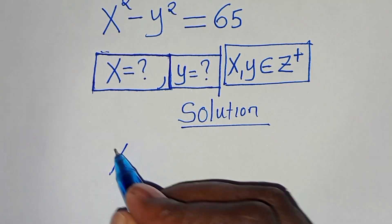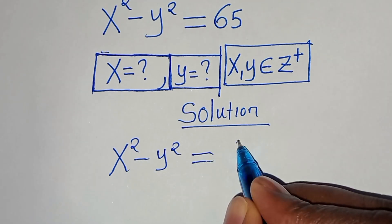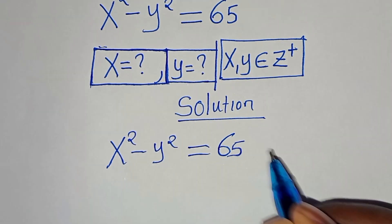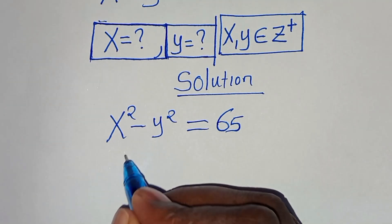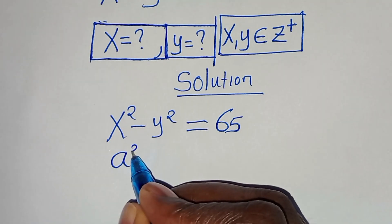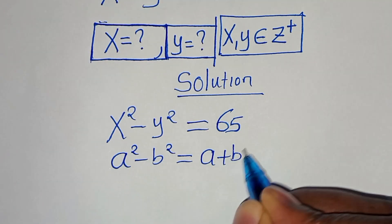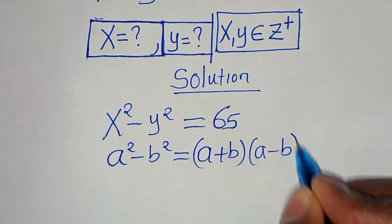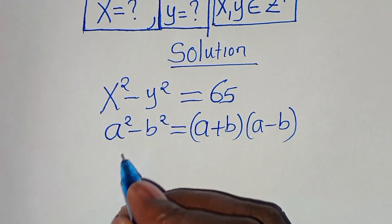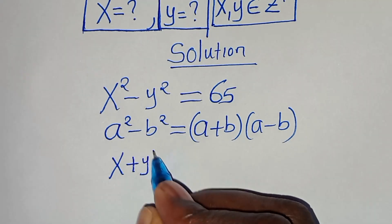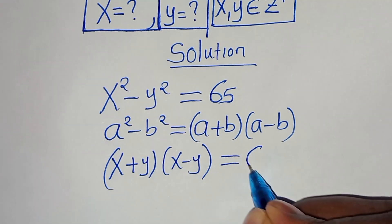We have x squared minus y squared, this is equal to 65. Now x squared minus y squared is in the form of difference of two squares, expressed as a squared minus b squared, which we can write as (a + b)(a - b). Applying this identity, we have (x + y)(x - y) = 65.